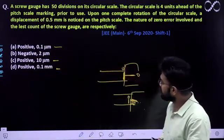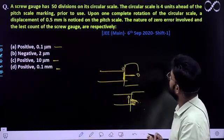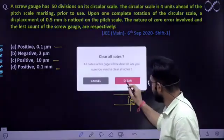Aur, ab aapko pata karna hai ki iska least count kya hai hai na. Kyunki sas mein aapko least count bhi pata karna hai. Upon this, the nature of the zero error involved and the least count of the instrument is. To least count jaldi se find out kar lete hain bhai.